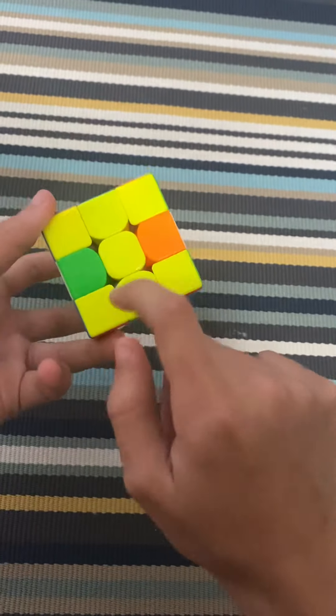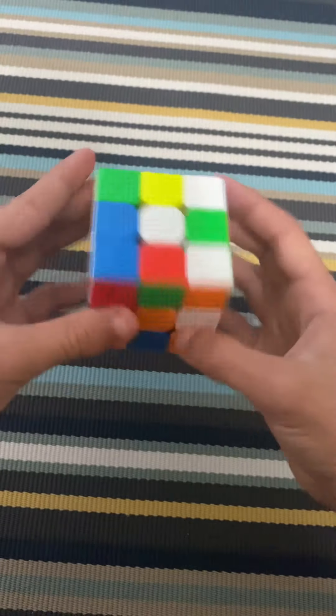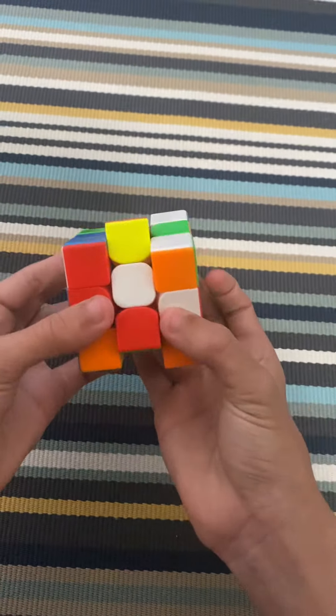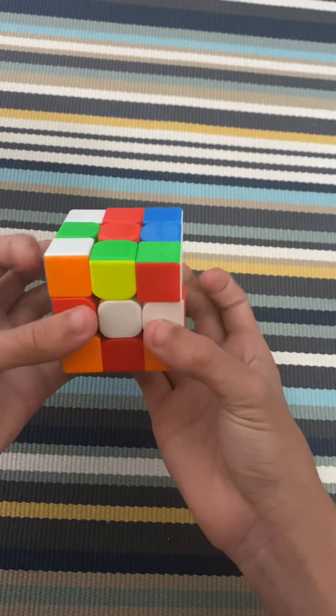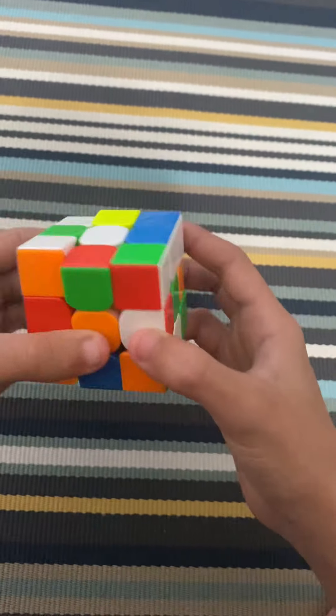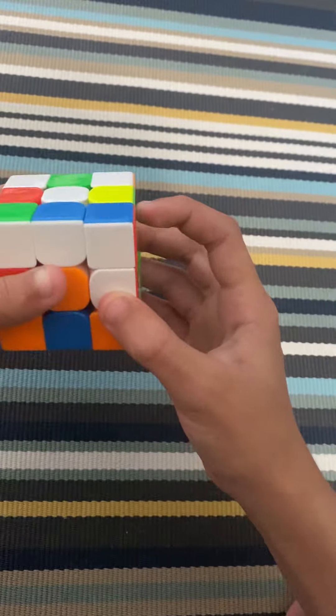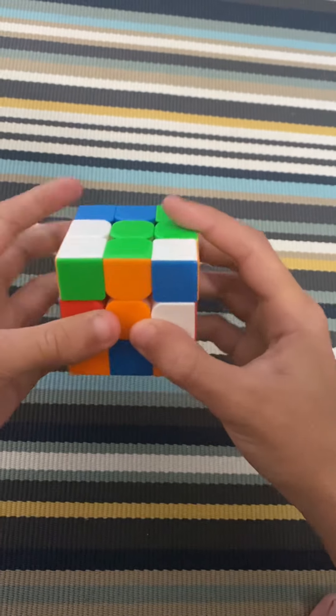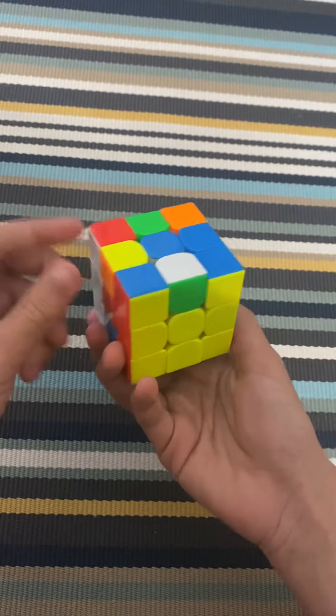So we have this yellow red edge here. I could do an M move and then U2 and then prime to insert it in the back. And then here we have the yellow green, I could do an S and then do that. And then we have this one.